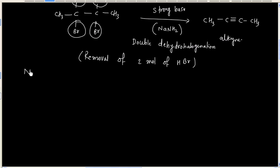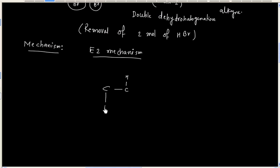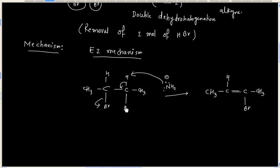Let us consider the mechanism of this reaction, and this is E2 mechanism. So base takes a proton, at the same time a leaving group lifts the molecule, so we will have a double bond. Here we have bromine.